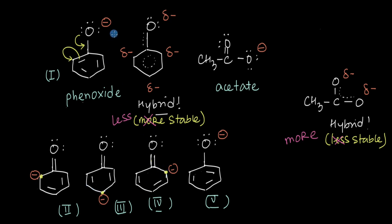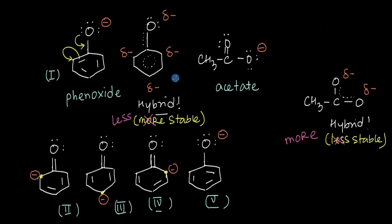Having a negative charge on oxygen, which is a highly electronegative element that loves electrons, leads to much greater stability compared to having a negative charge on the less electronegative carbon atoms. So energetically, all of these resonating structures are not equivalent — structures 1 and 5 are in fact going to be much more stable compared to 2, 3, and 4. Therefore the contribution of 1 and 5 to the resonance hybrid will be much greater, meaning the actual phenoxide ion will resemble structures 1 and 5 more than 2, 3, and 4.